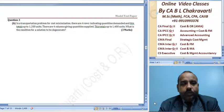In a transportation problem for cost minimization, there are 4 rows indicating quantity demanded with a total of 1200 units. There are 4 columns giving quantity supplied, also totaling 1200 units.